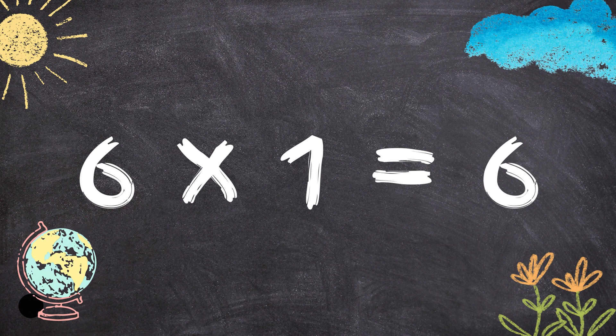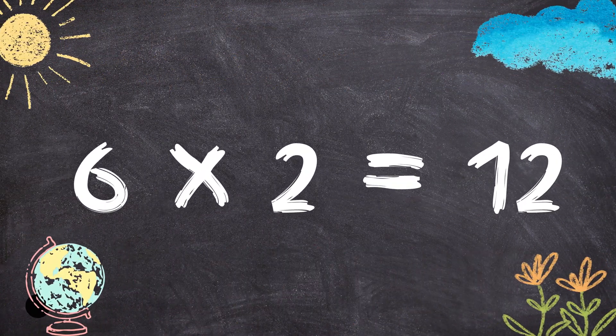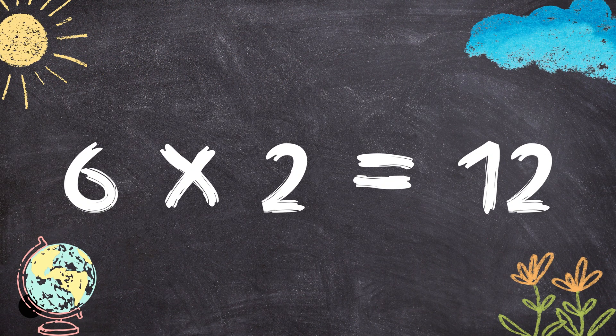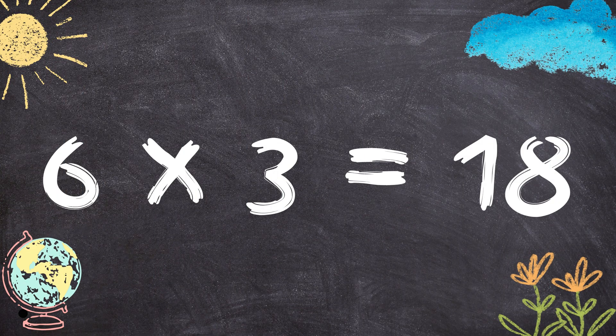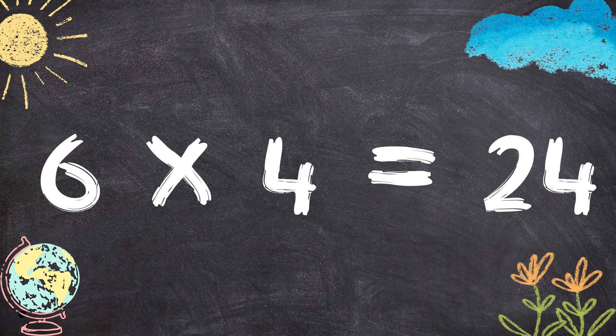6 times 3 equals 18. 6 multiplied by 4 equals 24. 6 times 5 equals 30.